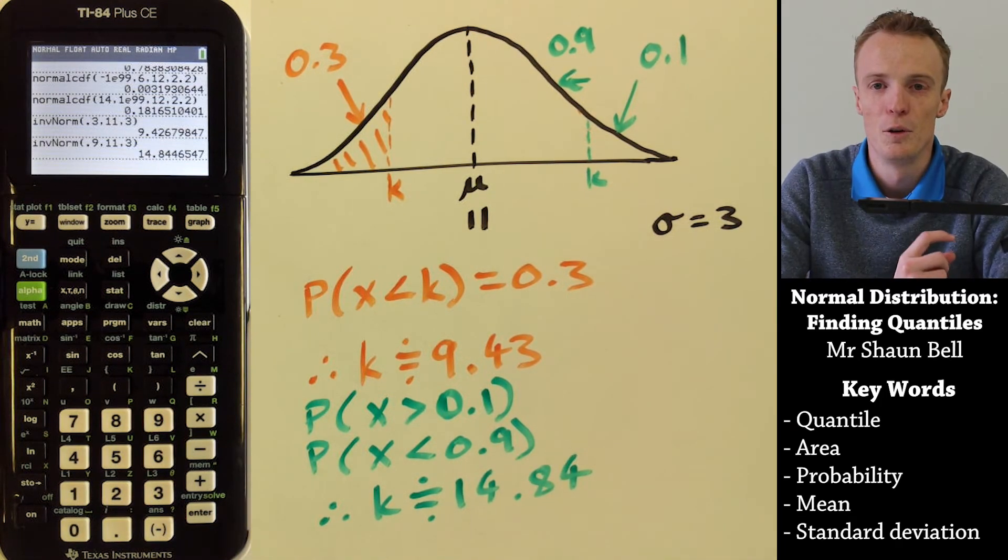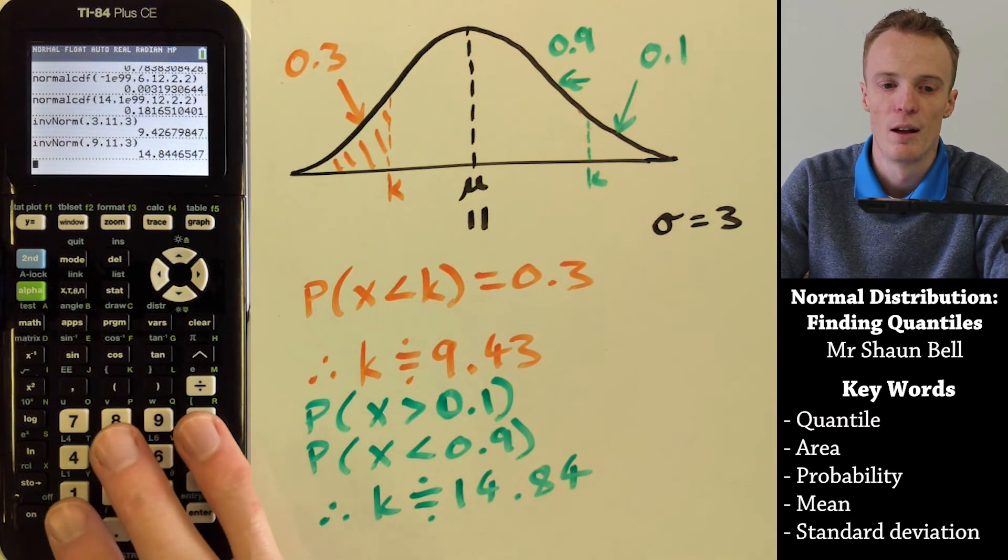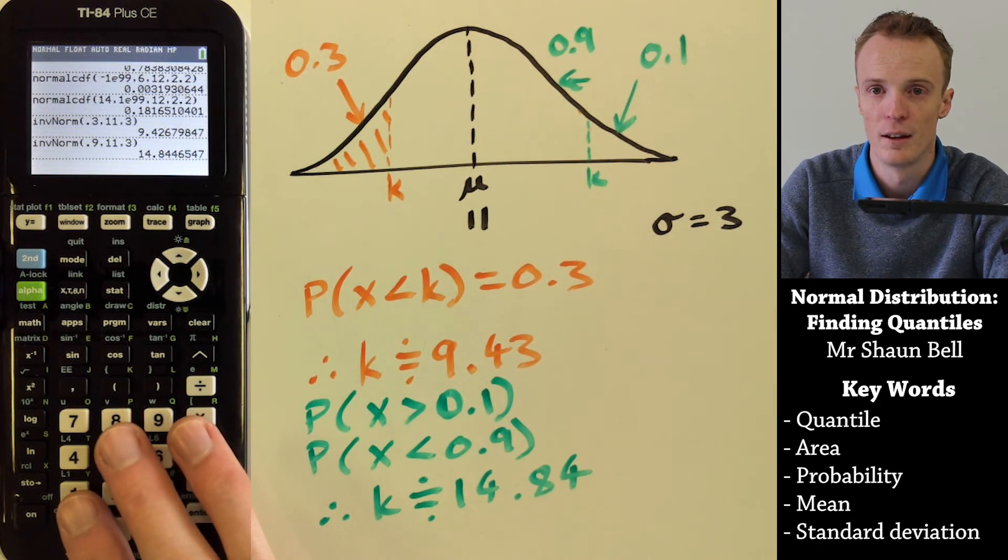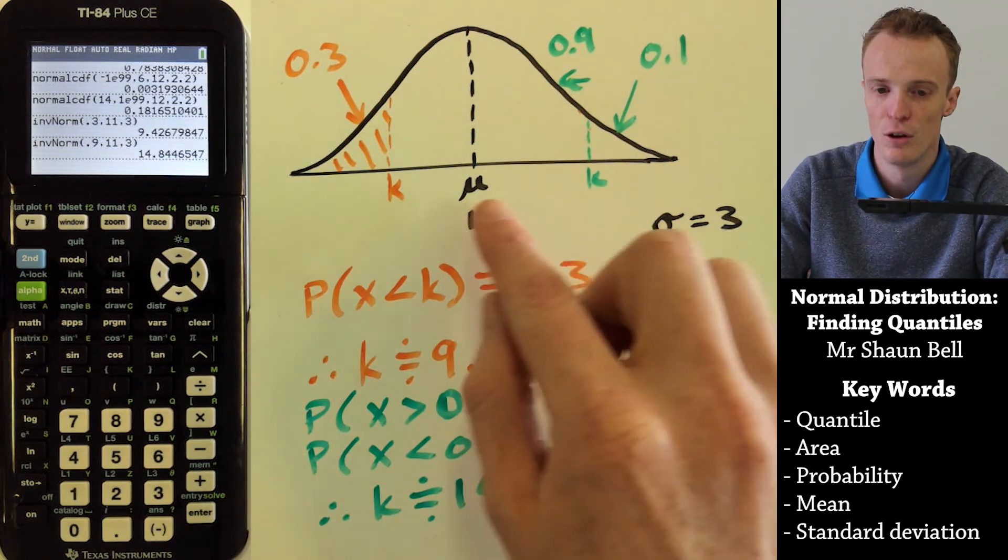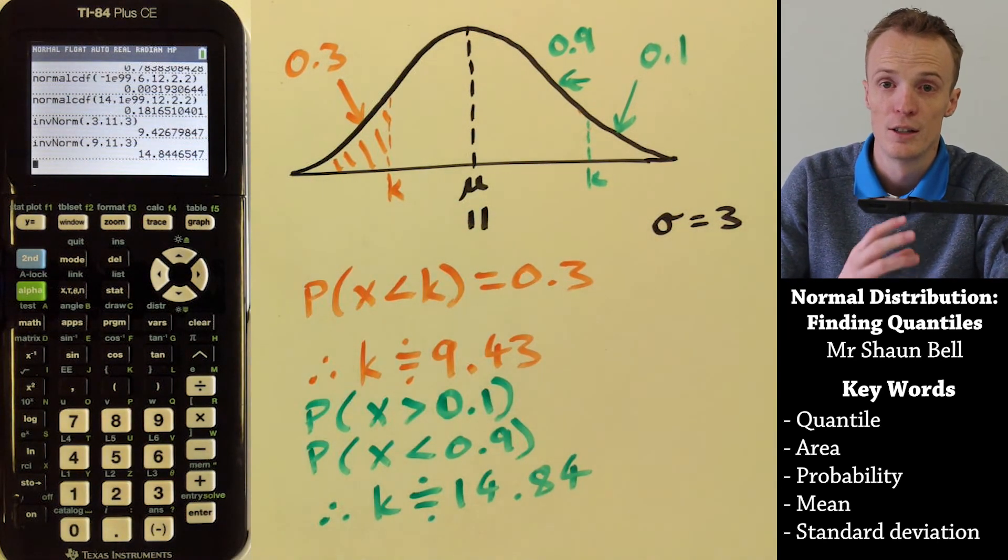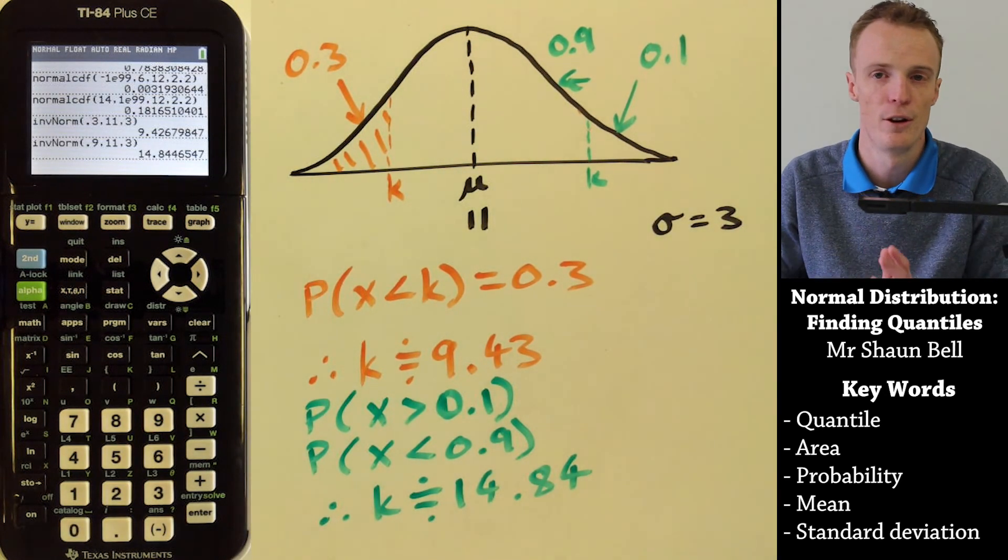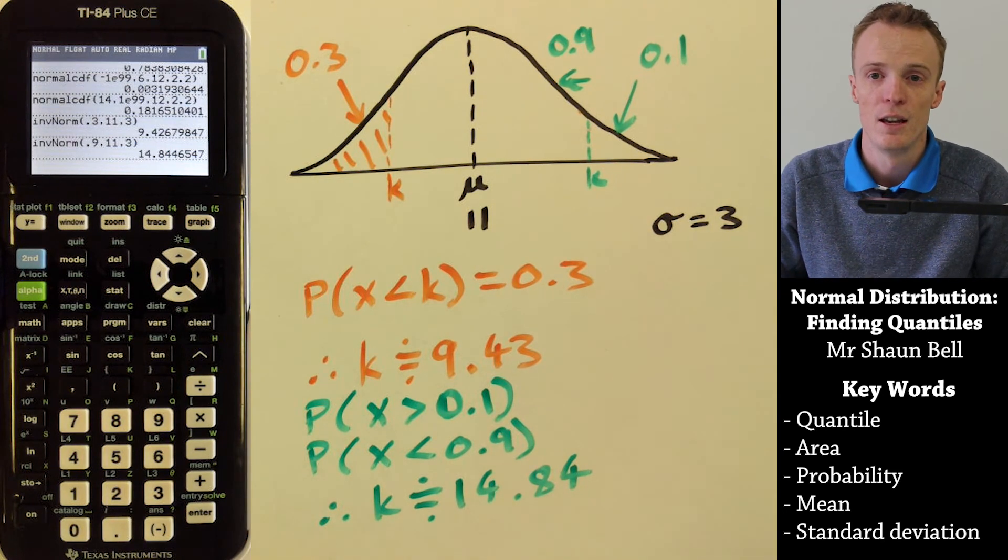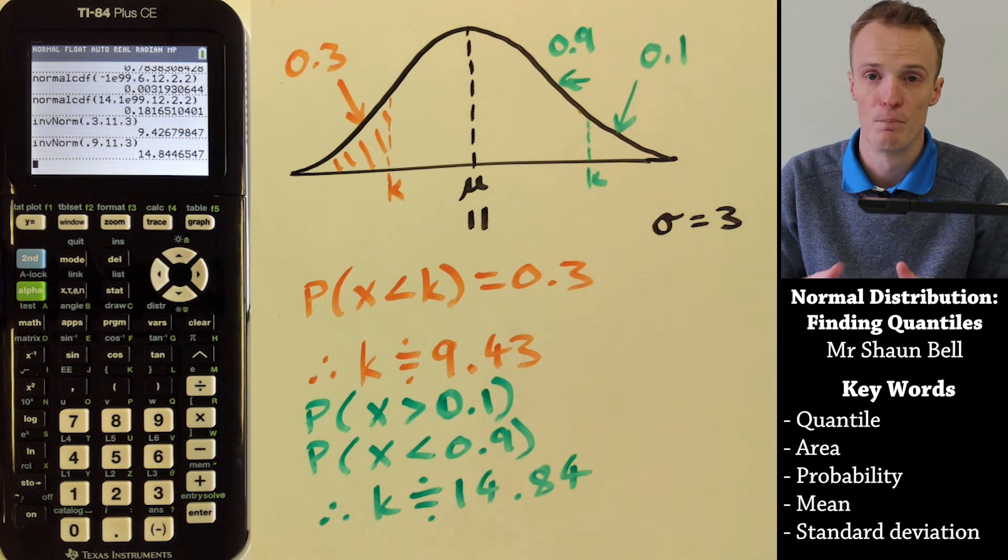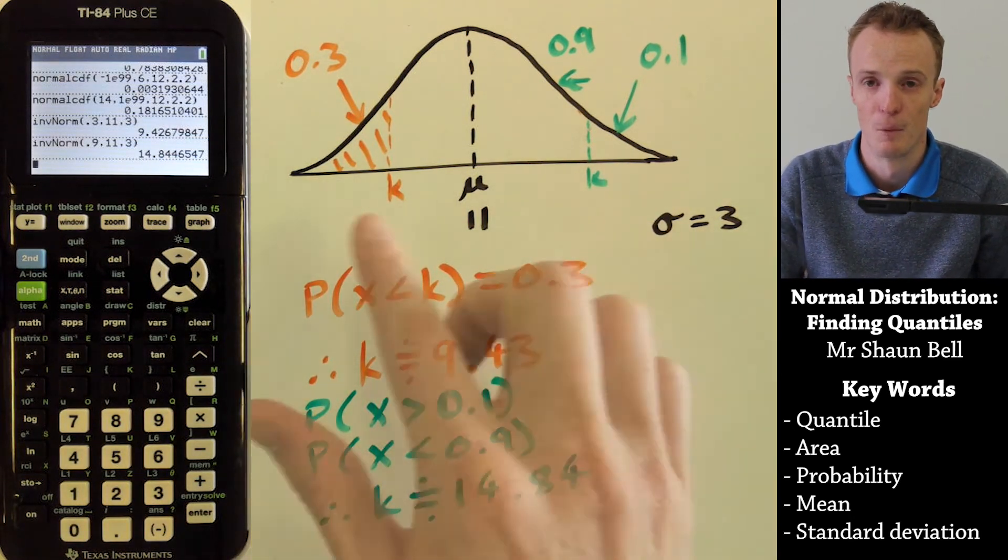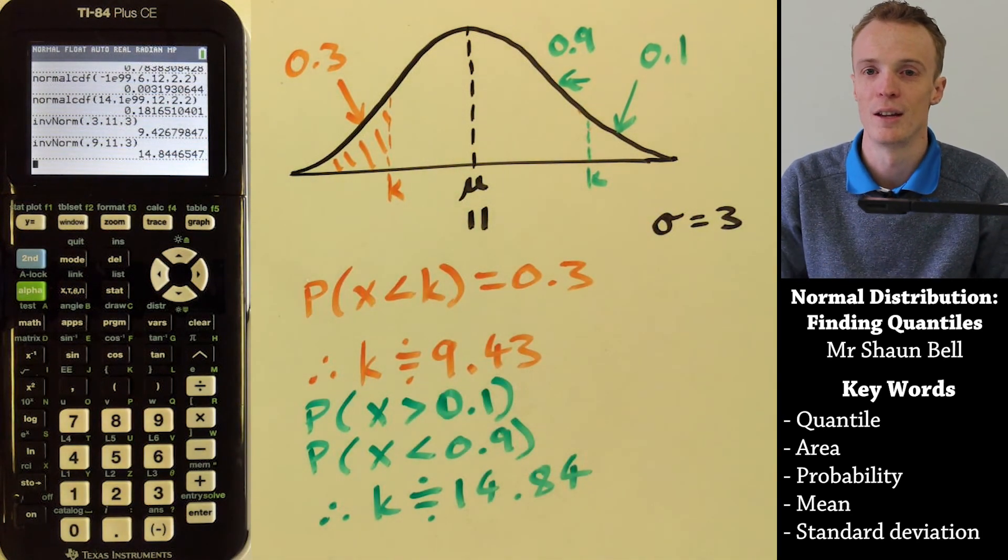The key thing to remember is when we're using the inverse norm function of the TI-84 Plus calculator, it only ever finds the area to the left of the K value. So if you're looking for the K value for a top 10% or top 30%, you've got to change that question to find the K value of the bottom 90% or whatever is to the left-hand side of the K value you're looking for.